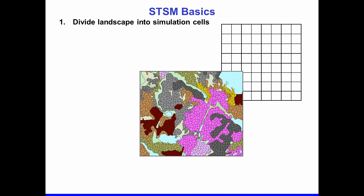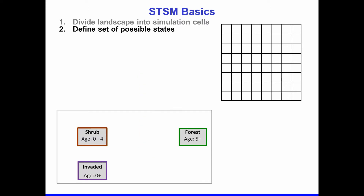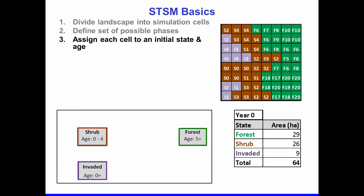To begin with, you need to take a landscape that you want to make predictions for and divide it up into what we call simulation cells. Those cells can either be gridded, as shown in the upper right of this slide, or they can be irregularly shaped polygons, as shown in the center. For this example, I'm going to use the grid on the upper right — a landscape with 64 simulation cells. We need to define what possible states any of those cells might be in at a certain point in time. Using a very simple example with three possible states: a shrubland, a forest, and an invaded state. Before running simulations, we conduct a vegetation inventory of the landscape and assign each cell to one of the possible states, as well as an age — how long that particular cell has been in that state.